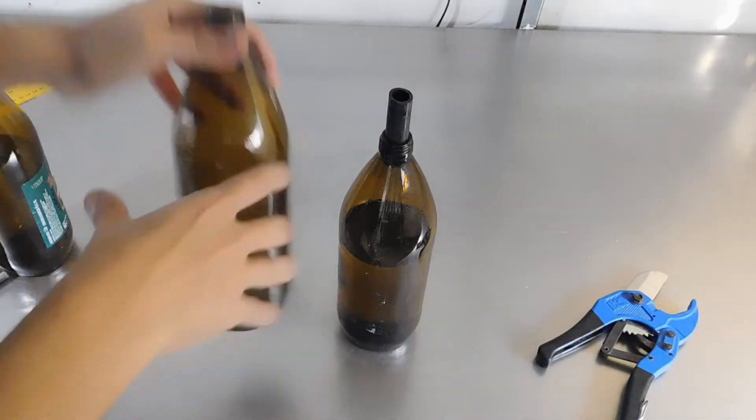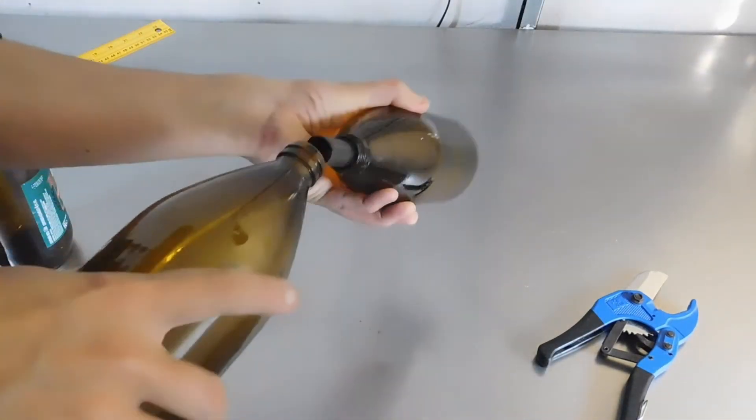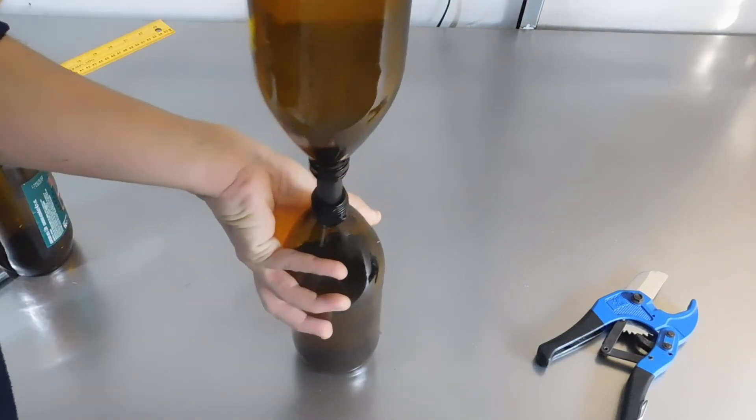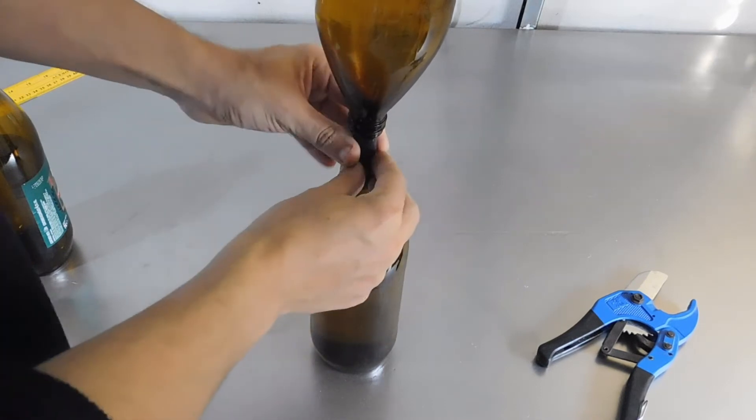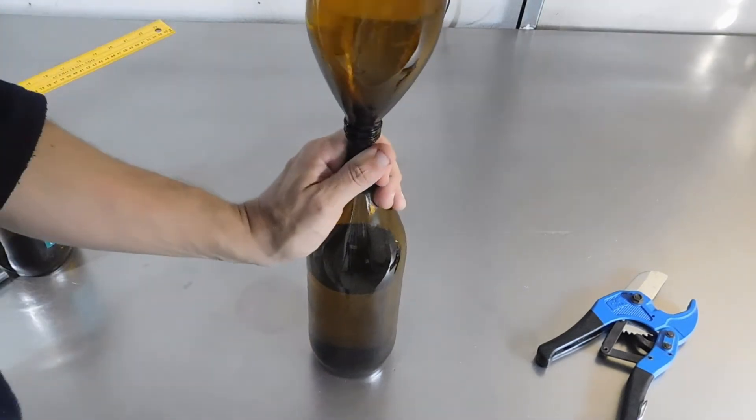Vamos a calzar uno con otro. Simplemente se calza sin mucho trabajo. No hay que dejar que haga a tope. Aquí se podría incluso pegar un pedazo de plástico para que no se unan uno con el otro.